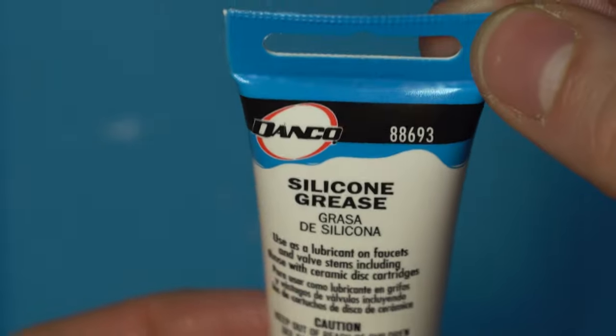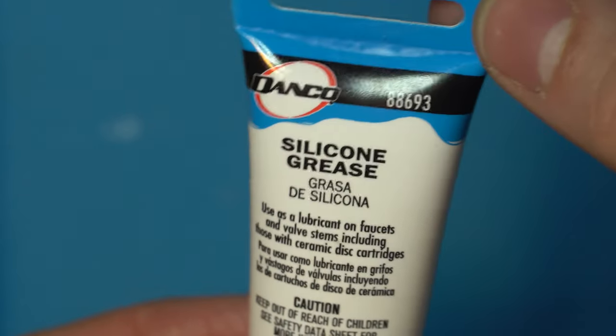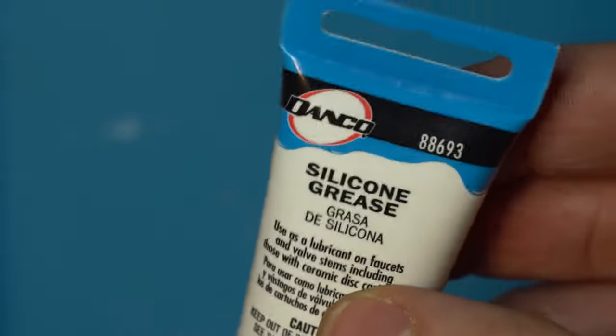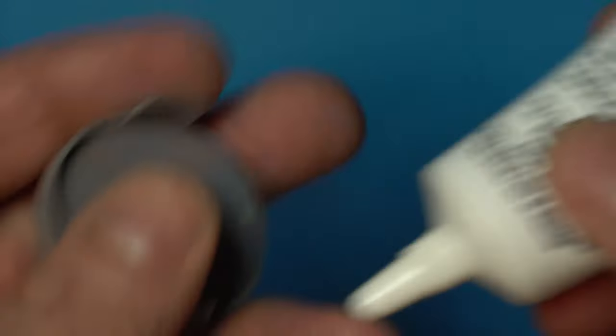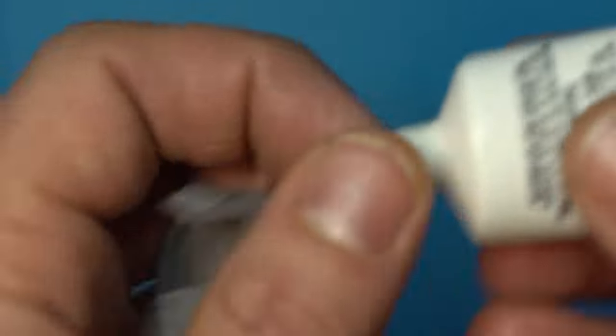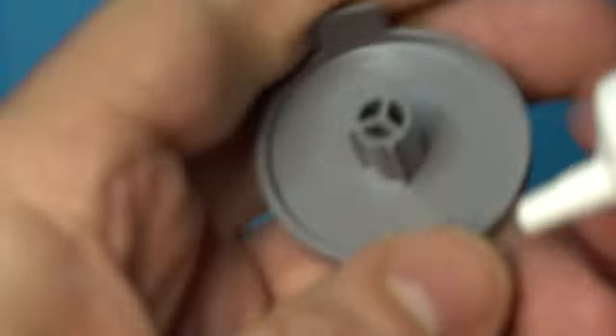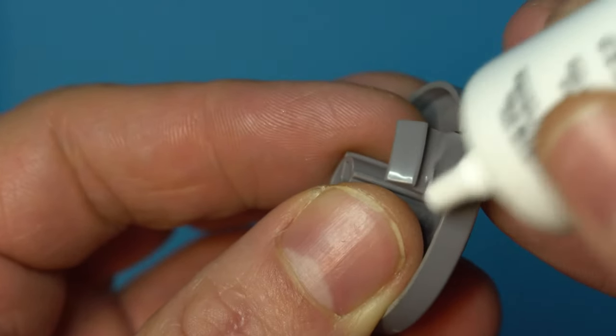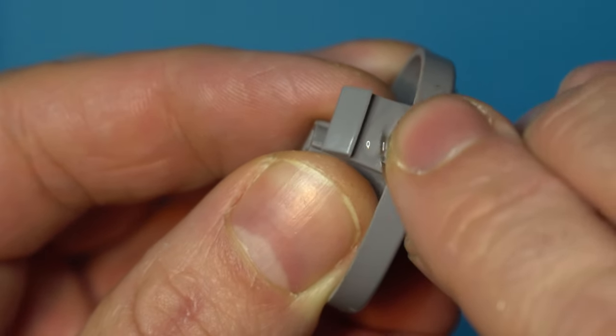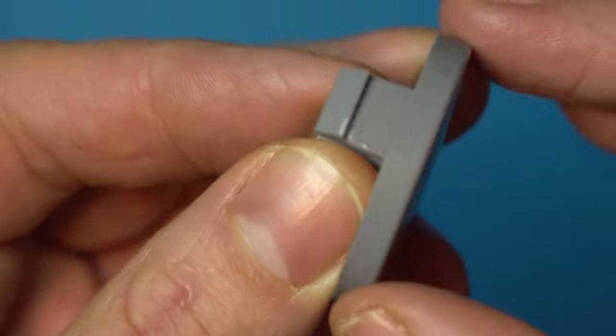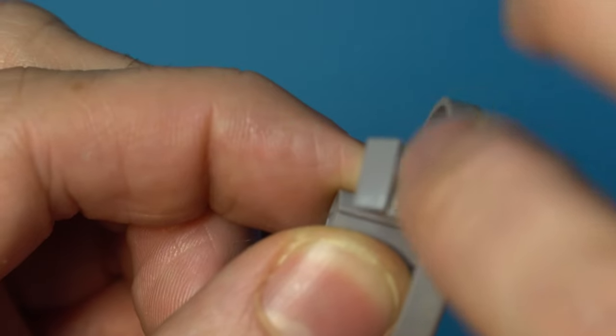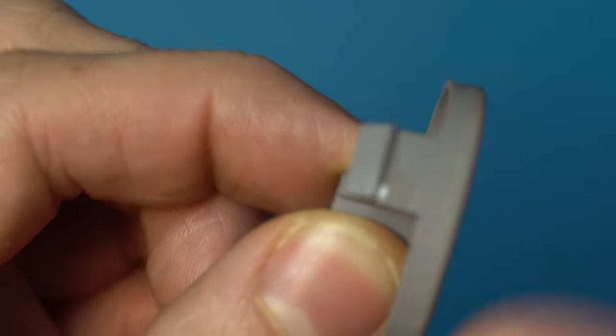I'm going to use silicone grease made by Danco 88693. You can usually get this at any plumbing store or Home Depot. This stuff is great for other applications as well and is perfectly safe in these buttons. We'll take a small amount and apply it to the rub areas. That might even be too much—you really don't need much. Apply it to the contact areas; this stuff is perfectly safe to get on your hands.